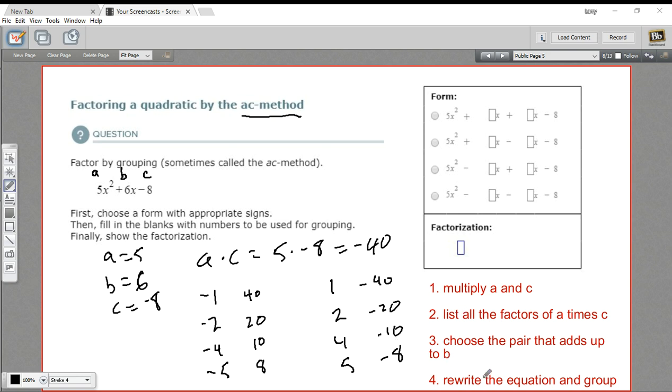And the next thing we want to do is choose the pair that adds up to B. B here is 6, that's the coefficient of our middle term, our X term. So where does it add up to 6? I'm just looking here, negative 1 and 40, that's 39.